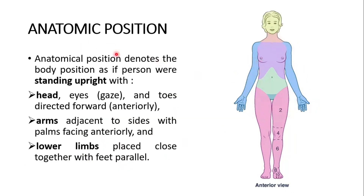The definition of the anatomic position: it denotes a body position as if the person were standing upright. This is the anterior view. The head, eyes — that is, the gaze — and toes are directed forwards anteriorly. The arms are adjacent to the sides with palms facing anteriorly.